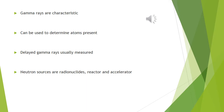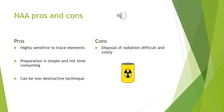Neutron sources commonly used are radionuclides, reactors, and accelerators. Some pros of using NAA are that it's highly sensitive, meaning that it can detect trace elements. It often requires minimal preparation, so it's not time consuming and is often non-destructive. One downside is that the disposal of radioactive material can be quite expensive.